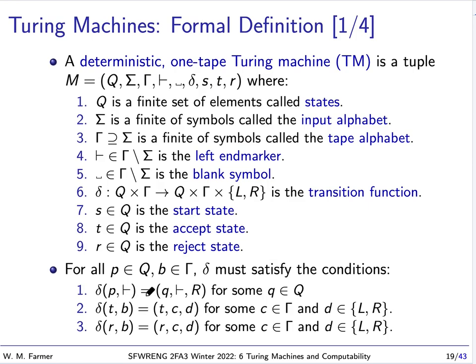There are conditions that delta, our transition function, must satisfy for all P in Q and all B in the tape alphabet. If we're in any state P and looking at the leftmost end marker, we must move to the right, possibly changing state. If we're in the accept state T, whatever we do, we always remain in the accept state. If we're in the reject state, whatever we do, we always remain in the reject state. Turing machines can be thought of as running forever, but once they reach an accept or reject state, they're effectively done — they will never leave that state again.